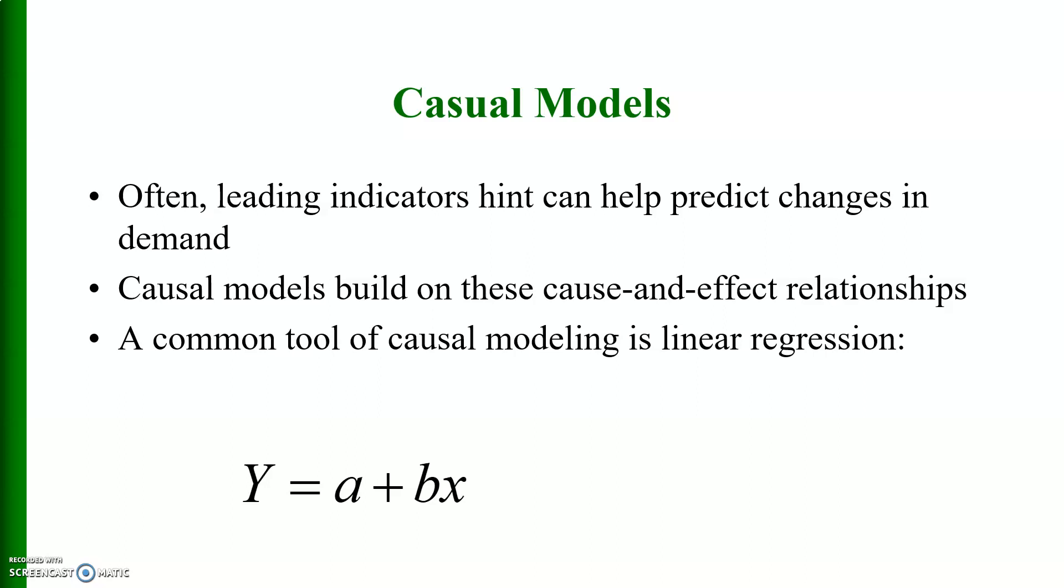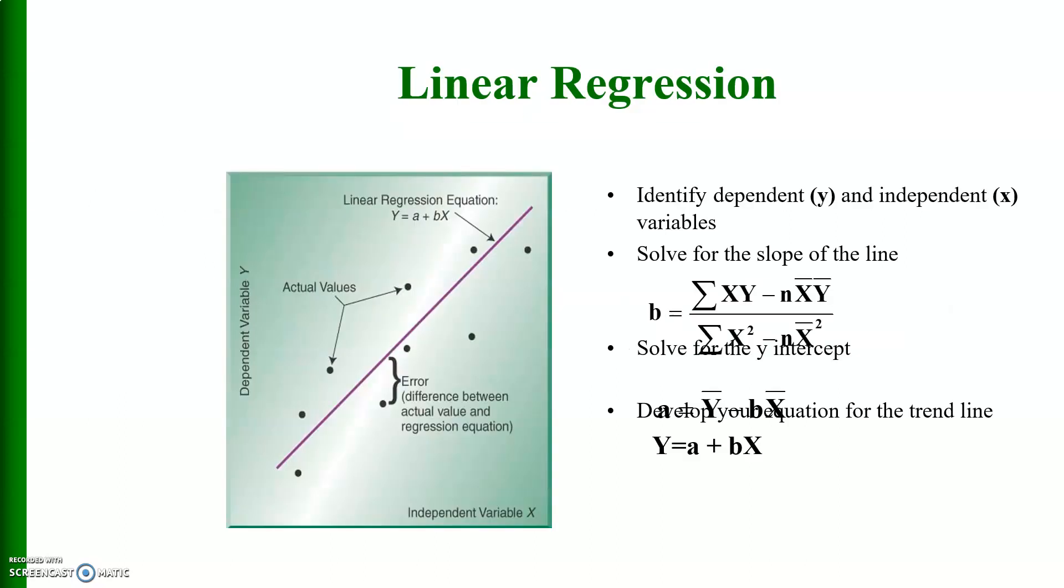Where Y equals A plus BX, where A is the intercept or constant, B is the slope or the rate of change of Y with respect to one unit change in X. This is linear regression. Here is the formula for B, the slope, and here is the formula for the intercept.